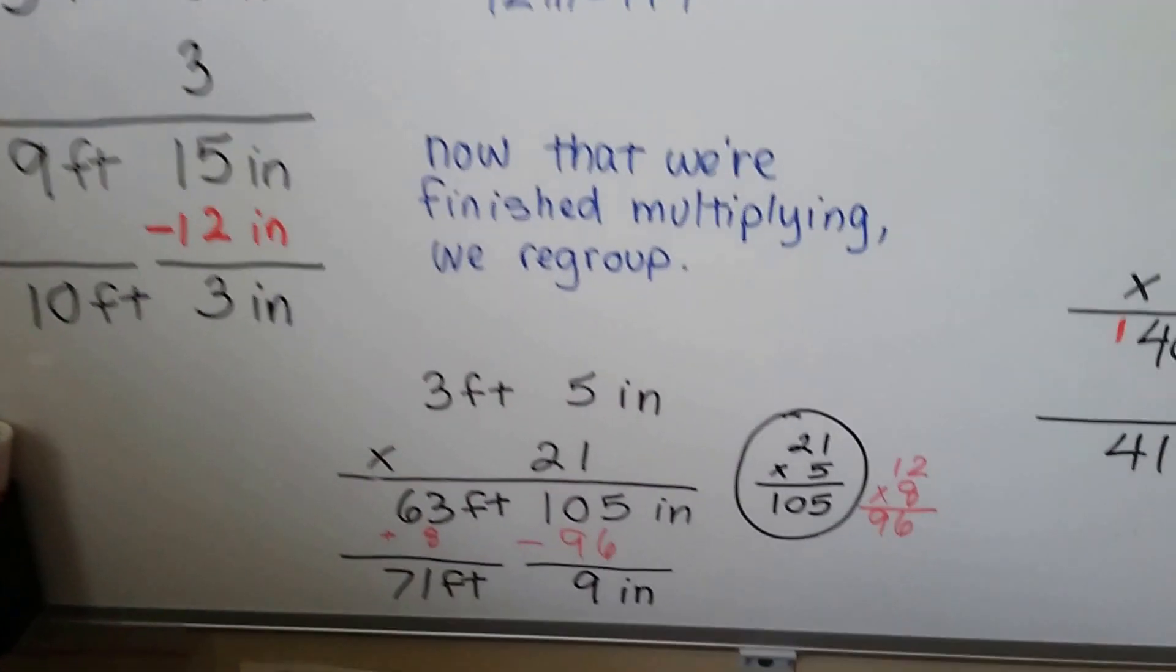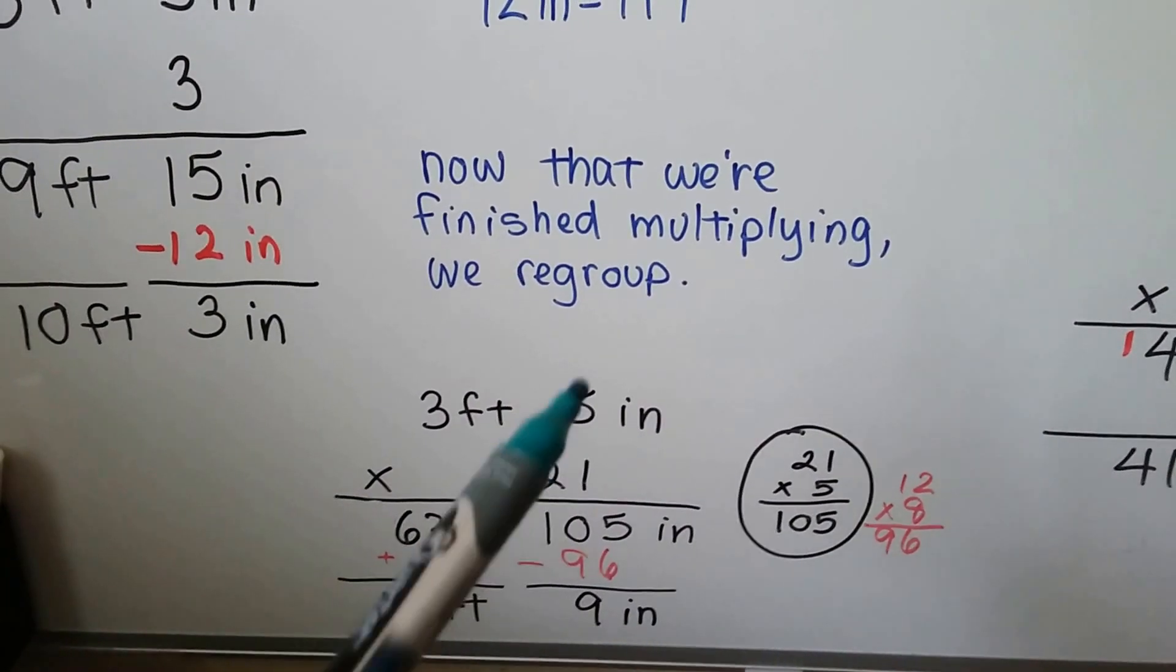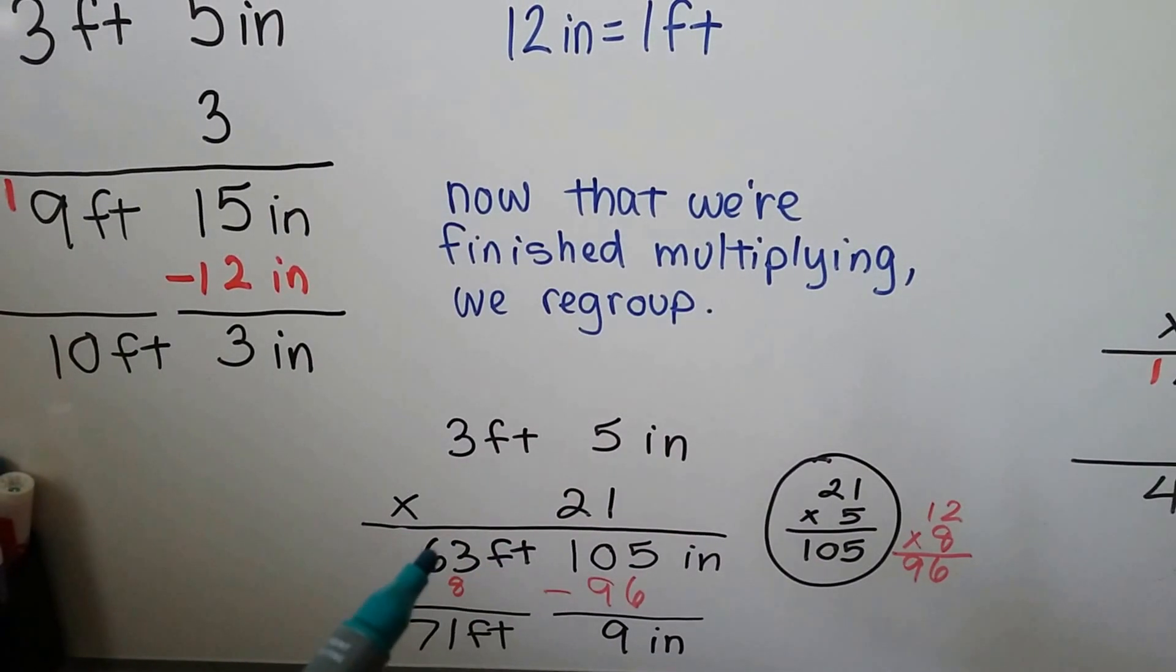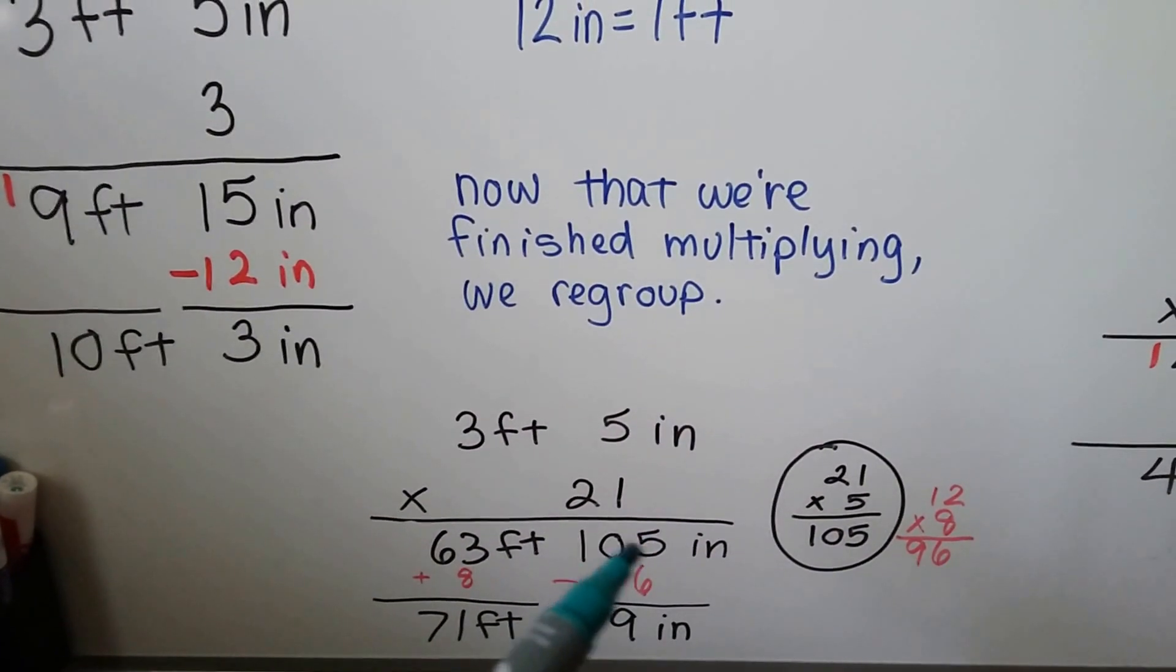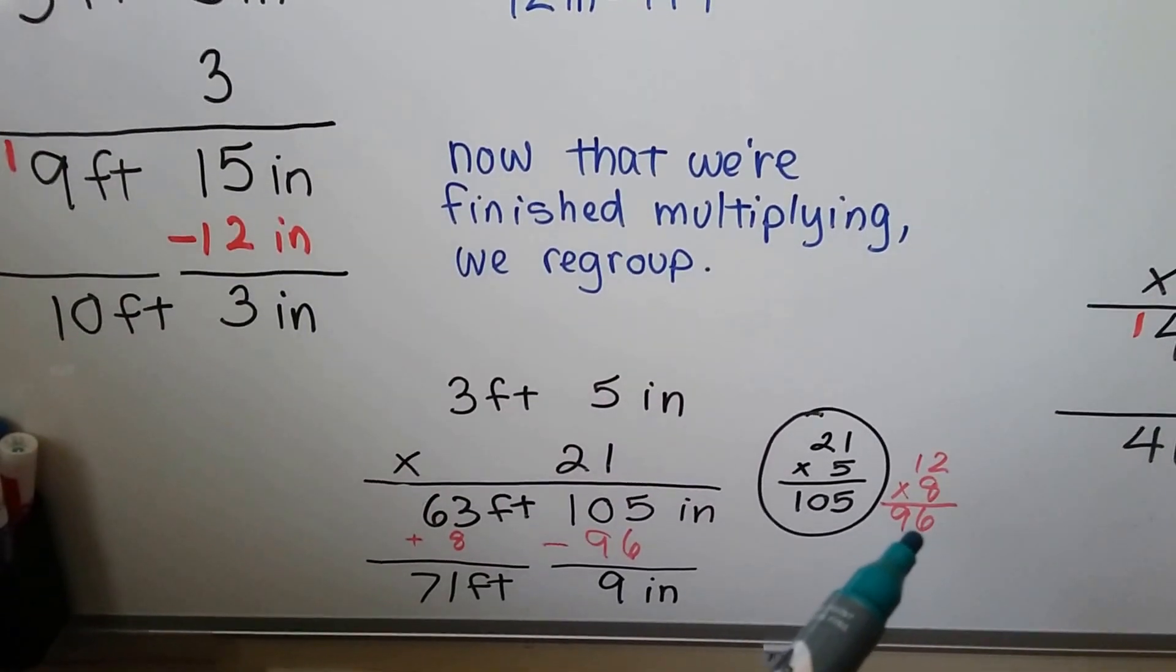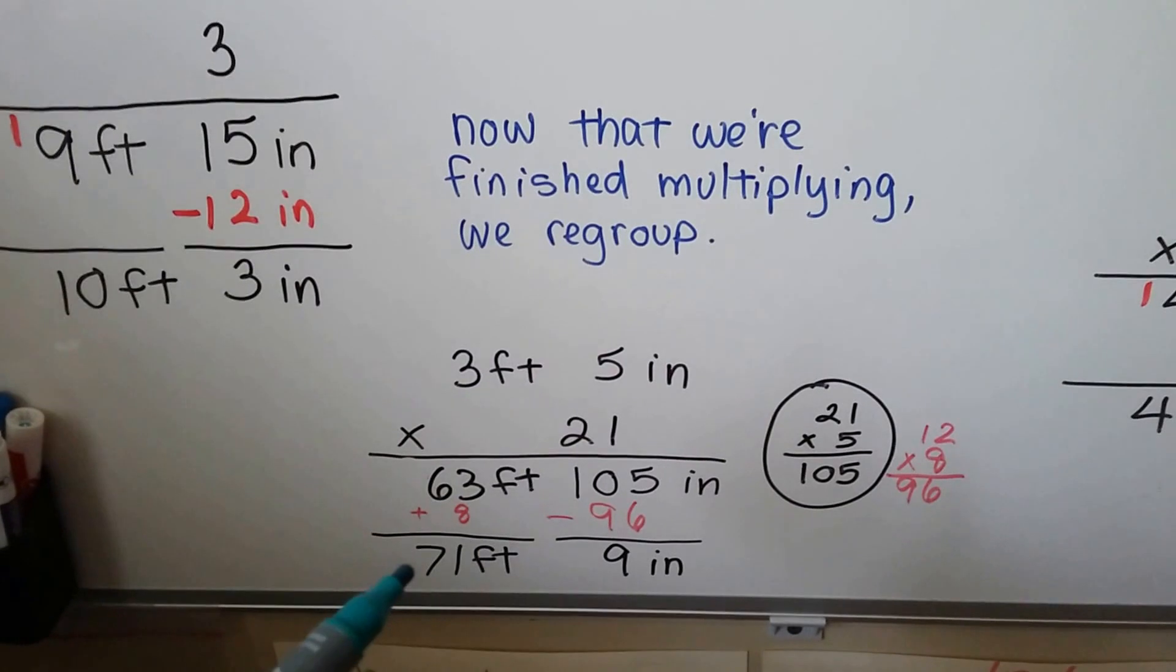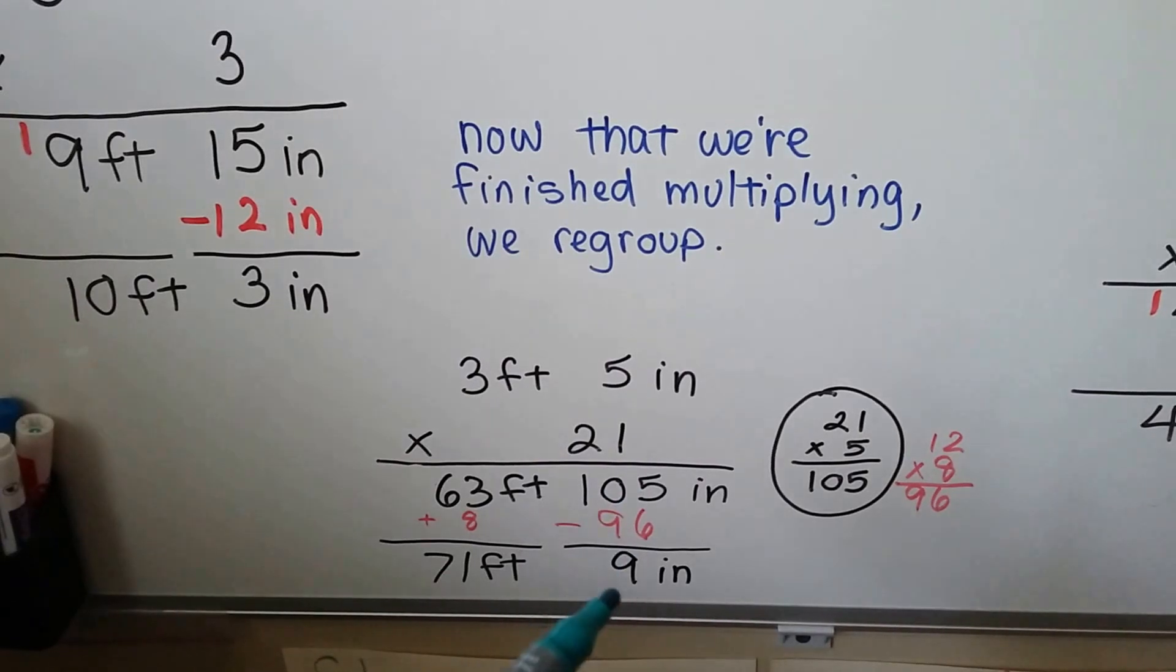We can even do it if there's double digits. If we have 3 feet 5 inches and we need to multiply it by 21, we just do 21 times 5. We can rewrite it on scratch paper. 21 times 5 is 105. That's going to give us 105 inches. Now we do 21 times 3. That's going to give us 63. So we have 63 feet 105 inches. Now we need to know how many feet are in this 105 inches to give it to the feet side. I know that 12 times 8 is 96 and that comes really close. So there's 8 feet that we can pull out of here. So we'll pull the 96 inches out, but we'll add 8 feet to this side. That's going to give us 71 feet. And over here we're going to have 9 inches left over after we do the 105 minus 96.